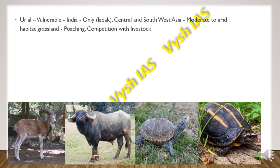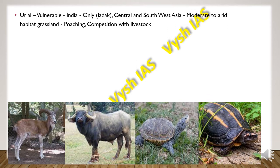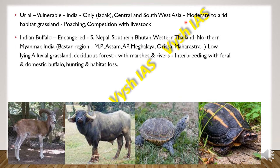Then we have the Urial, which is vulnerable. It is found in India only in Ladakh, and also in Central and Southwest Asia. They are found in moderate to arid habitat grasslands. The major threats they face are poaching and competition from livestock.